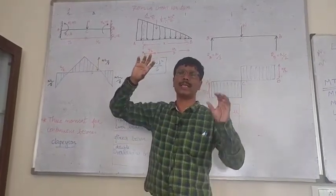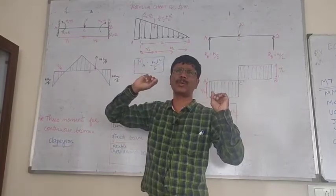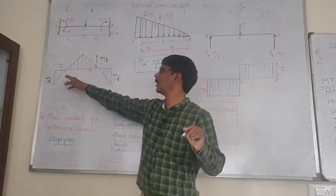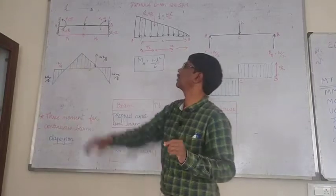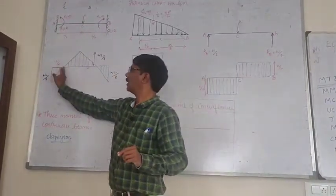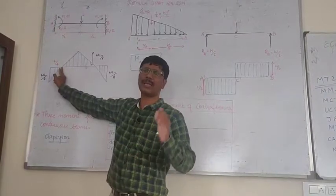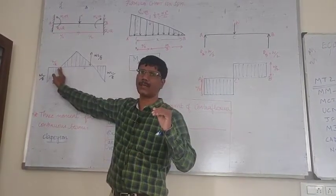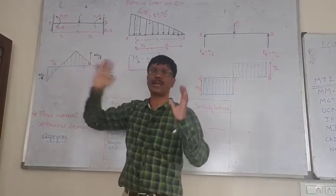This is WL by 8. This is WL by 4. This is WL by 8. When the bending moment changes sign, this is point of contraflexure. They are fixed there.